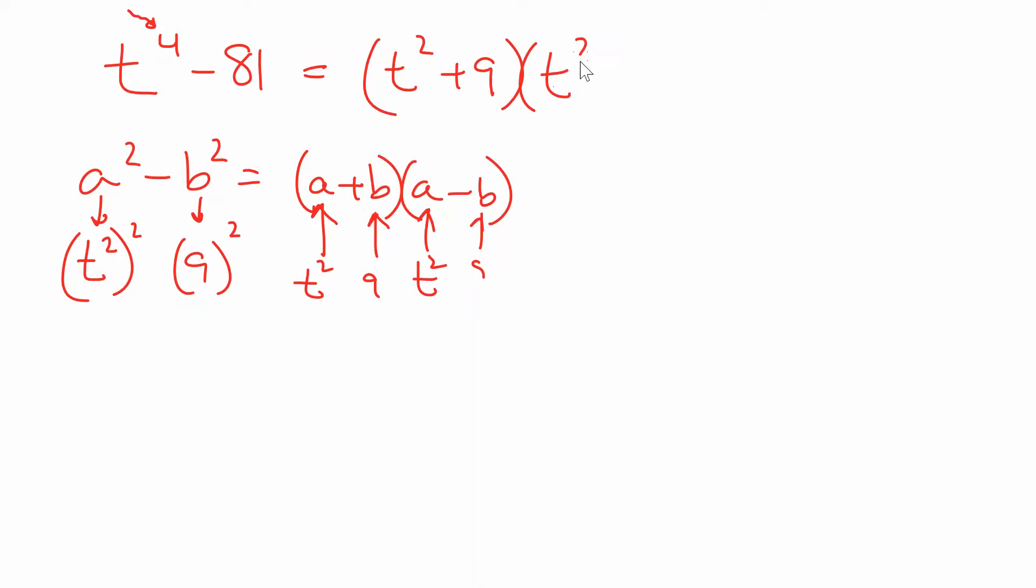So t to the 4th minus 81. Your problem could be a little bit different, but I think most of you guys have an exponent of 4 over here and a perfect square on this side. So the way I would break this down first is to say this is a difference of two perfect squares. So it reduces down to a plus b and an a minus b. So notice in our case, our thing that's being squared is t squared. What is being squared to give you 81? That'd be a 9.